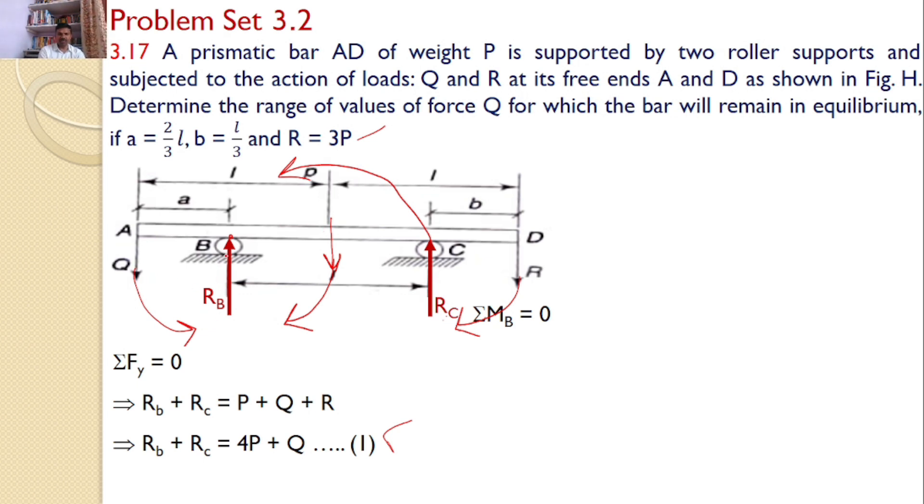Q is at distance A, P is at distance L minus A, RC is at distance L, and R is at distance L plus B. So you know all the distances.